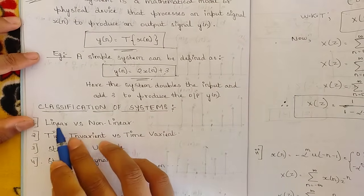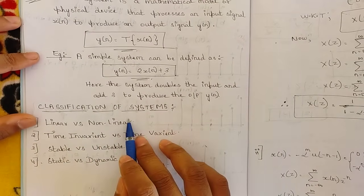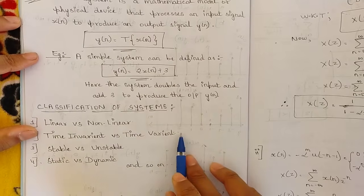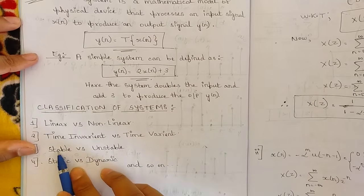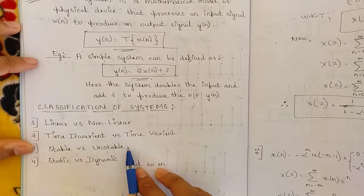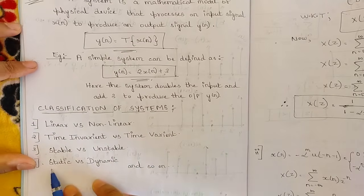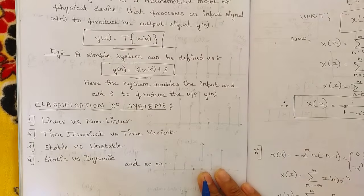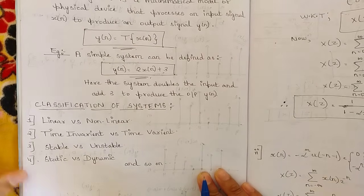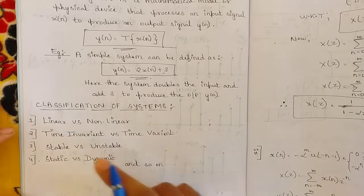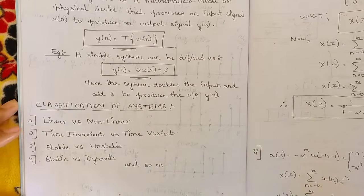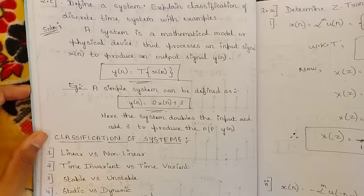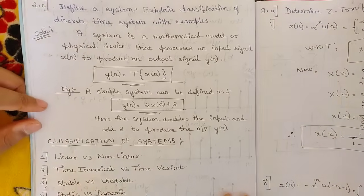Systems are classified into many types: linear versus non-linear systems, time-invariant versus time-variant systems, stable versus unstable systems, and static versus dynamic systems, among others. I have mentioned four of them here. This is the answer for this question — you can note it down.